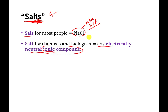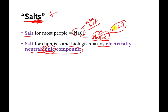Table salt is the classic example. It's made of a sodium ion with a positive charge and a chloride ion with a negative charge. So it's made of ions — remember, ions are anything with an electrical charge — but the charges cancel each other out, making sodium chloride electrically neutral even though it's made of charged particles. That means sodium chloride is a type of salt.